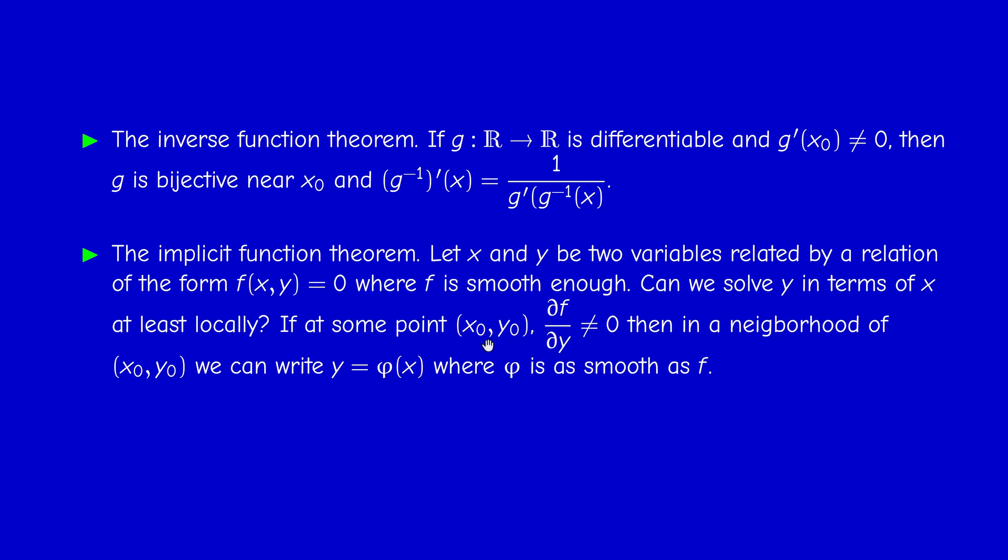So, the function phi inherits the smoothness of F. So, it's very easy to state. And, of course, we can interchange the role of X and Y here. So, if the derivative with respect to X is not 0, then X would be a function of Y. So, now, don't worry if you didn't encounter these two important theorems, because our target is to extend all these results to a general context that I shall explain now.